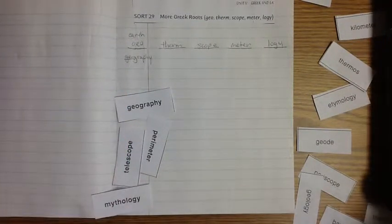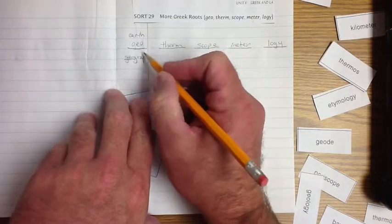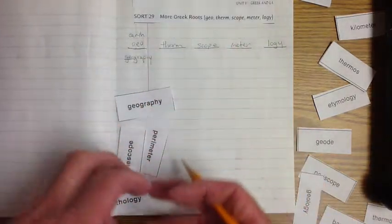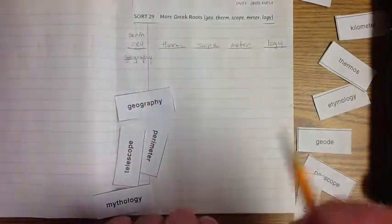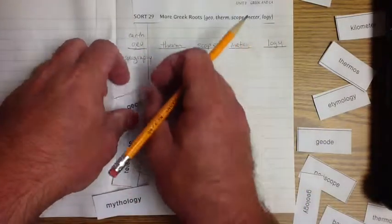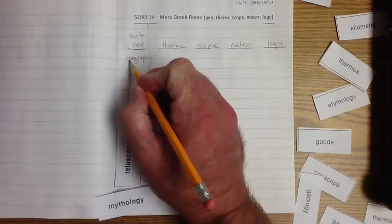So if graph means write, geo means Earth, geography is mapping. We're mapping, it shows the geography, it's mapping the Earth, it's writing the Earth. How cool is that? I love it. Writing the Earth.